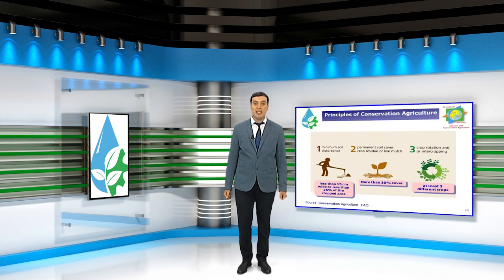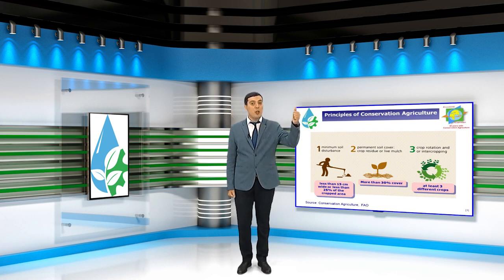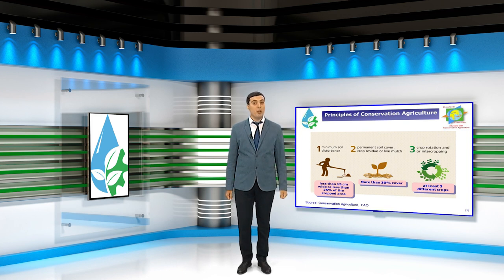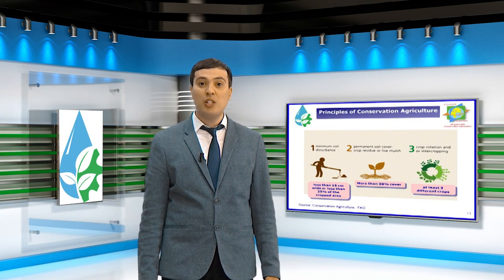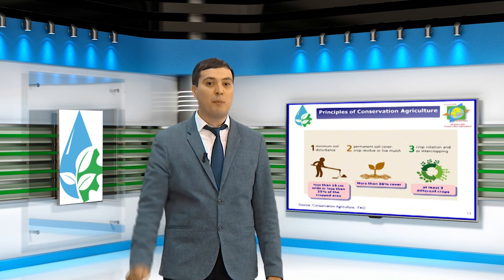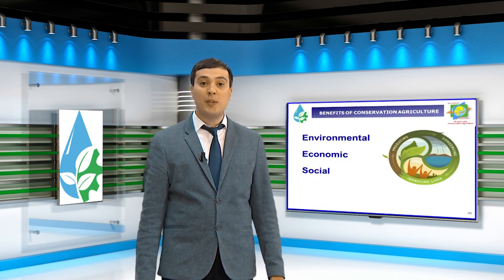Conservation agriculture has three main principles: first, minimum soil disturbance; second, permanent soil cover; and third, crop rotation. These principles must meet the following requirements. Firstly, the disturbed area must be less than 15 cm wide, or less than 25% of the cropped area. Secondly, an area with less than 30% permanent soil cover is not considered conservation agriculture. And last, crop rotation should involve at least three different crops.